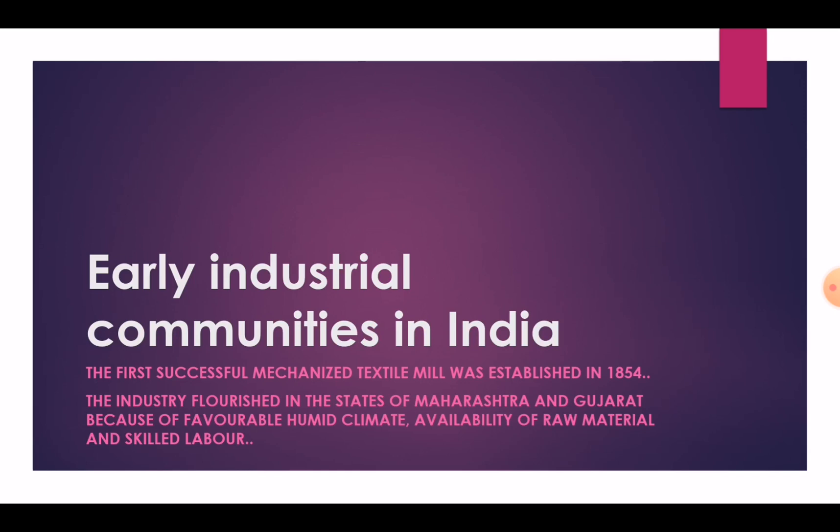In early industrial communities in India, the first successful mechanized textile mill was established in 1854. The industry flourished in the states of Maharashtra and Gujarat because of favorable human climate, availability of raw material and skilled labor.